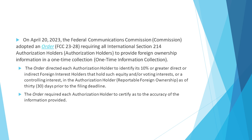On April 20, 2023, the Federal Communications Commission adopted an order requiring all International Section 214 authorization holders to provide foreign ownership information in a one-time collection. The order directed each authorization holder to identify its 10% or greater direct or indirect foreign interest holders that hold such equity and/or voting interest or a controlling interest in the authorization holder as of 30 days prior to the filing deadline.